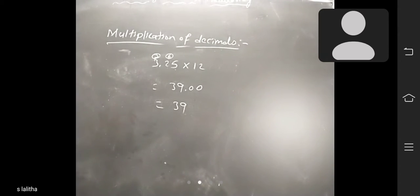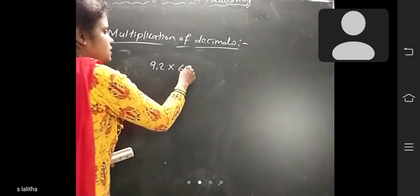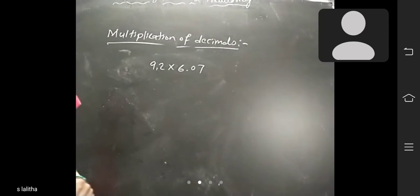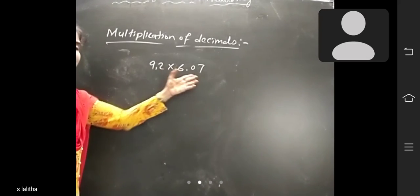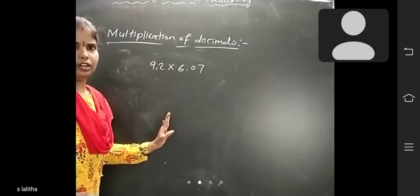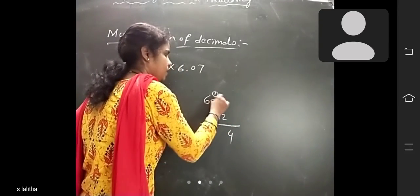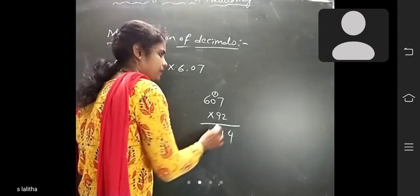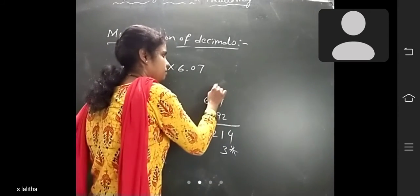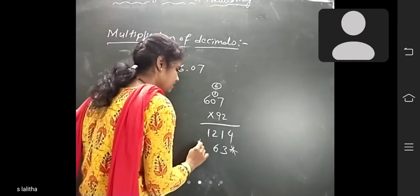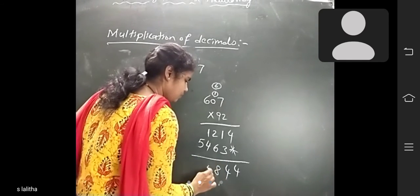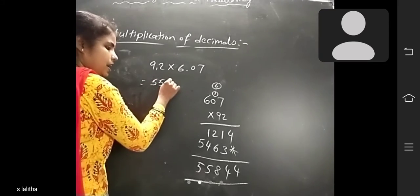Next: multiplication of a decimal by a decimal. Example: 9.2 × 6.07. First, remove the decimal points and multiply 607 × 92. Compute: 607×2=1214; 607×9=5463, shifted one place. Add: 55844. Now count total decimal digits: 9.2 has 1 digit after decimal, 6.07 has 2 digits — total 3 digits.